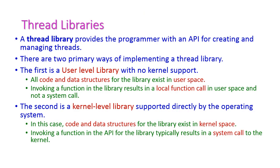The thread library provides the programmer with an application programming interface for creating and managing threads. All threads will be created and managed using the thread library only. There are two ways of implementing a thread library: the first is a user-level library and the second is a kernel-level library.